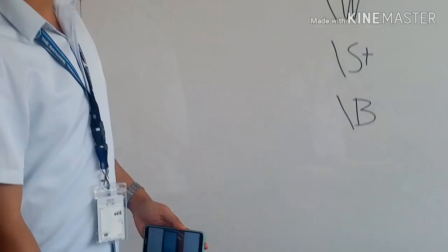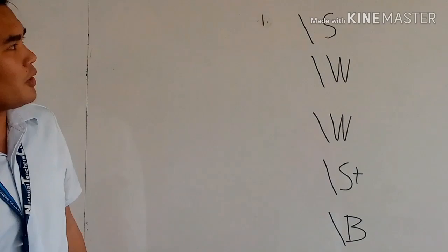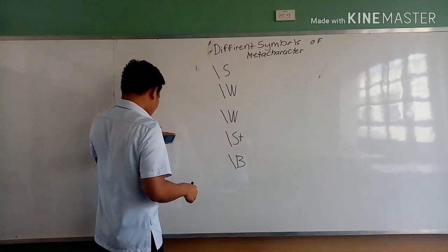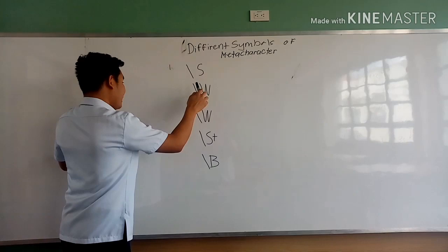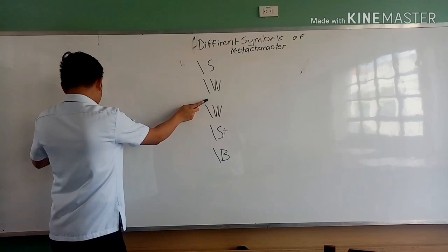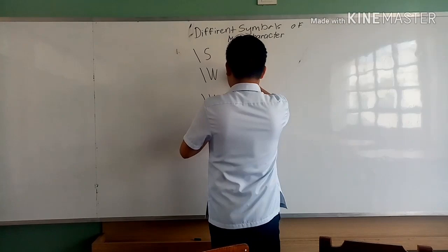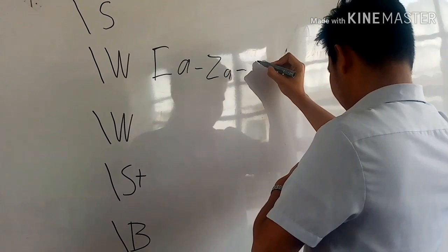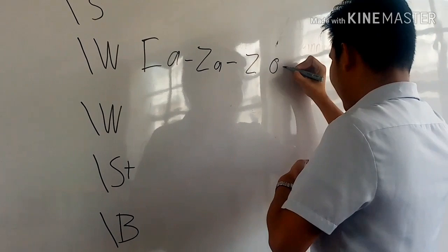These are the different symbols for data characters. First, \w represents a non-white space word character (short form), covering A–Z, a–z, and 0–9. Second, \W represents a non-word character.